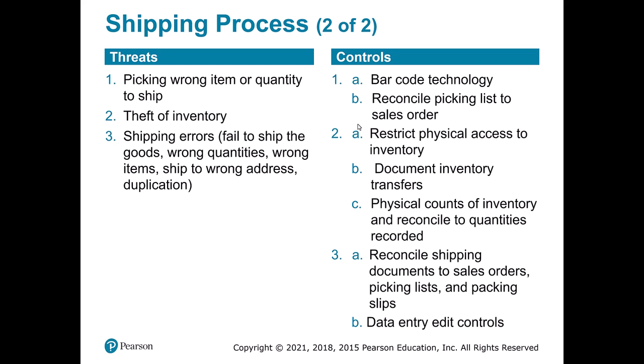Some problems at the shipping stage include picking the wrong items or quantity, theft, and shipping errors. Theft can be a significant issue with valuable goods. Controls include barcodes, reconciliation — the pick list needs to match the sales order — limiting physical access to the warehouse, documentation whenever inventory moves, and physical inventory counts. You also don't want the person doing picks to be the same person doing inventory counts; you want those to be separate jobs so each person can check the other.